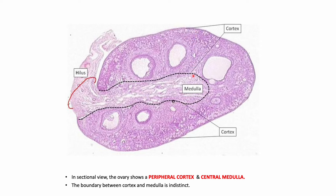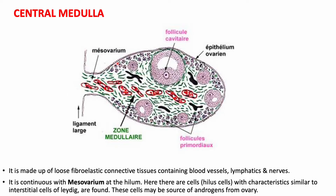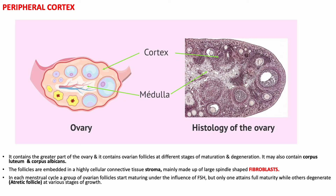In a cut section, the ovary is divided into a peripheral cortex and an inner medullary area. The boundary between the cortex and medulla is indistinct, and the medulla is continuous with the hilum. The central medulla is made up of loose fibroelastic connective tissue consisting of blood vessels, lymphatics, and nerves. At the hilum, hilus cells are present, which are similar to the interstitial cells of Leydig and are thought to produce androgens.